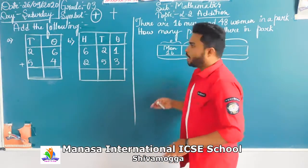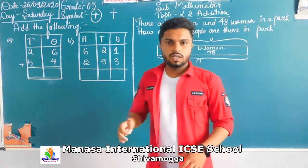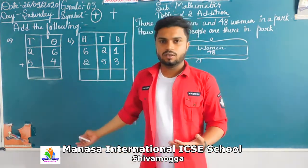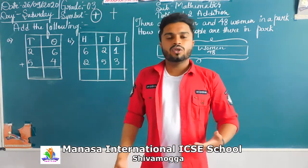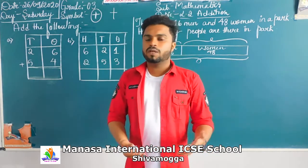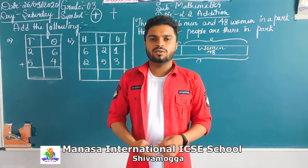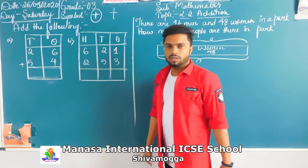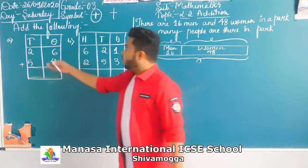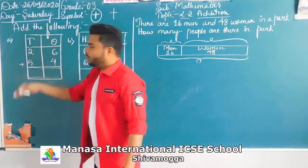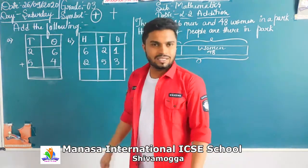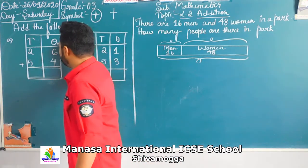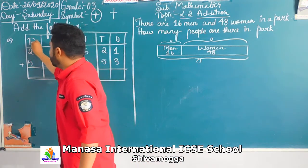This is a very easy chapter that you will do at home. You have done it in your previous classes also — it is very simple. So please look at the board. Add the following. I have given two places: ones and tens.